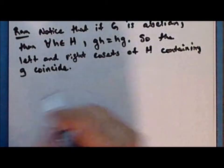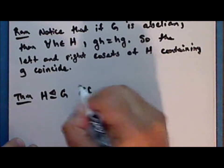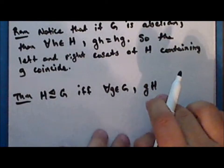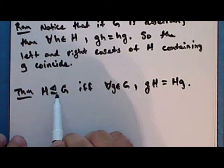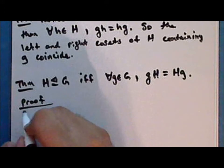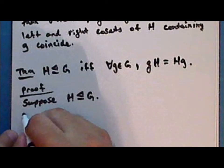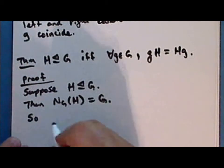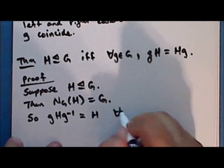We can make a stronger statement, stated as a theorem: H is a normal subgroup of G if and only if for every element g in G, the left coset of H containing g equals the right coset of H containing g. That is, H is normal if and only if left and right cosets coincide. Proof: suppose H is a normal subgroup of G. Then the normalizer of H in G is the entire group, so the set of conjugations of H by g equals H for every g in G.